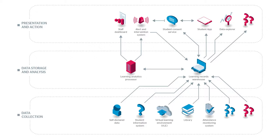Looking at the diagram, the elements are coloured blue and red. The blue items are the core — the bits that everyone uses — and the red items are the optional items, where you could choose different options or not choose an item at all.